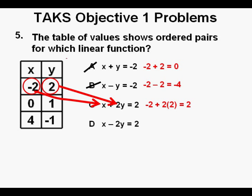Next we check answer C in the same manner. And that turns out to be negative 2 plus 2 times 2, which equals 2. So answer C is looking good as far as a right answer.